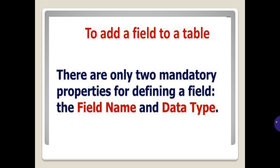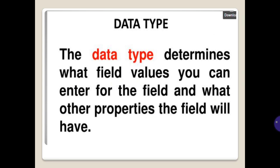To add a field to a table, there are only two mandatory properties for defining a field: the field name and the data type. The data type determines what field values you can enter for the field and what other properties the field will have.